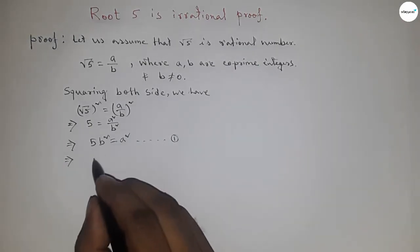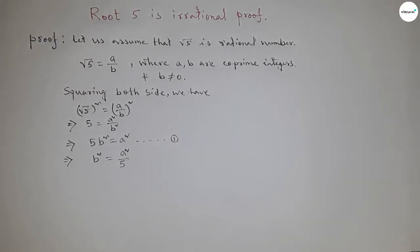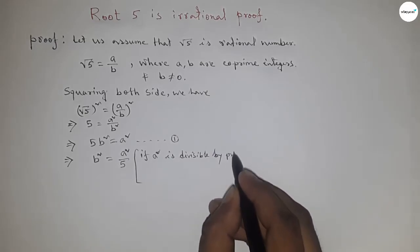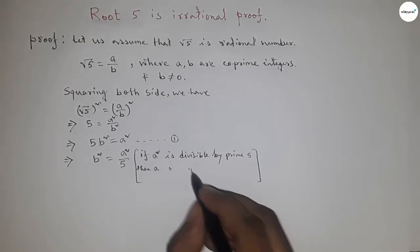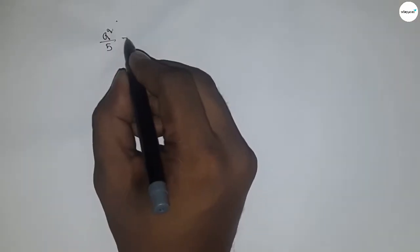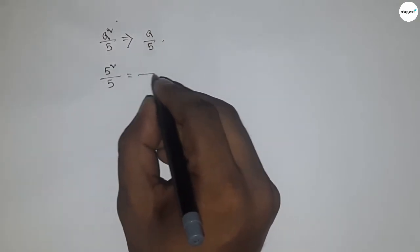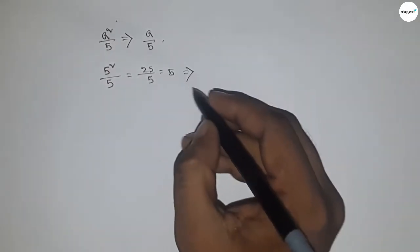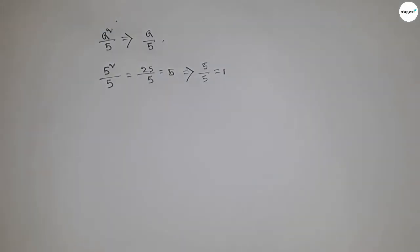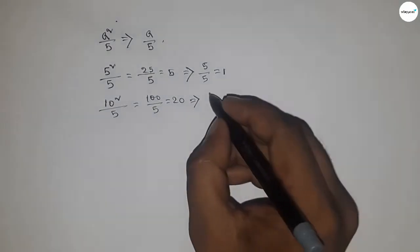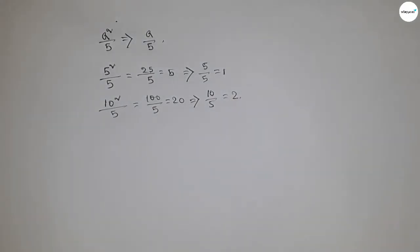Now I'm going to use a theorem: if a² is divisible by a prime number 5, then a is also divisible by 5. For example, if a = 5, then 5² = 25, and 25/5 = 5, so a is also divisible by 5. Another example: 10² = 100, and 100/5 = 20, and 10/5 = 2. So a² divisible by 5 implies a is divisible by 5.